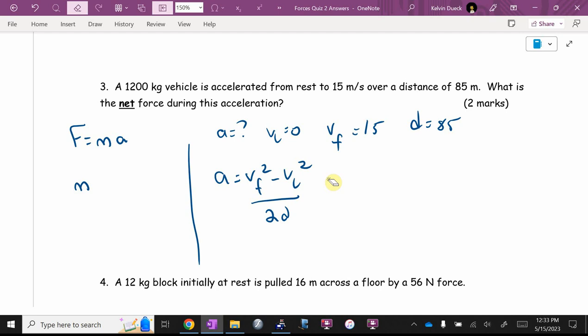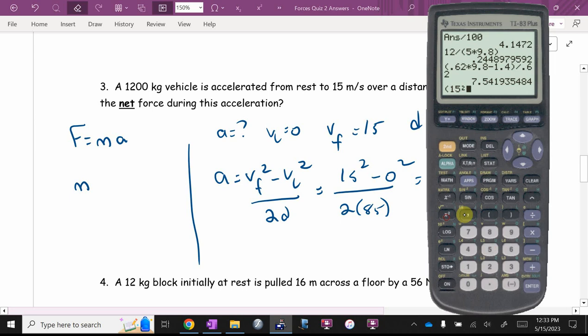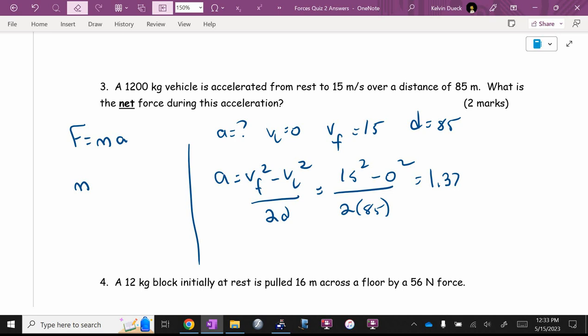It's going to be 15 squared minus 0 squared all over 2 times 85. 15 squared, the minus 0 squared won't make a difference, divided by 2 times 85. Do I need to square root because of the square? No, no. There's no square root on the A. 1.323. I'm going to write 1.32, but I'm going to use my answer button. My pen's not working well. Meters per second squared. And I'm going to walk that over here.